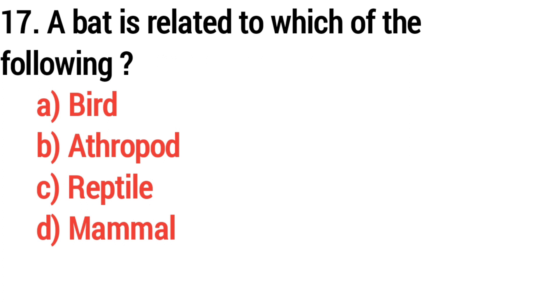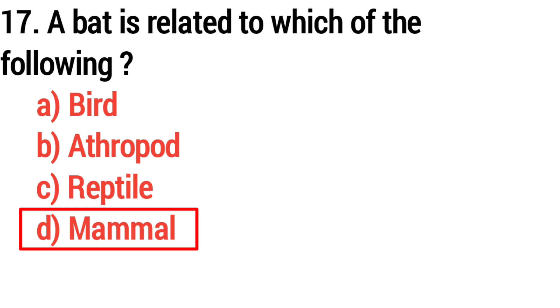Question number seventeen: a bat is related to which of the following? The answer is option D, mammal.